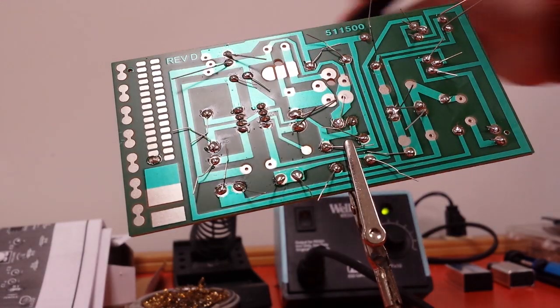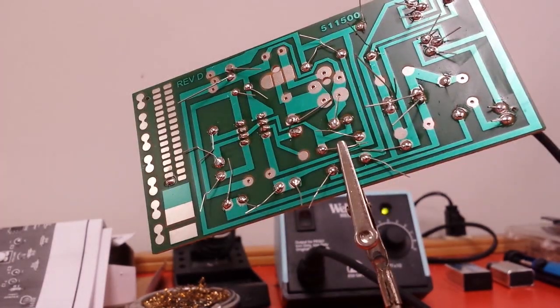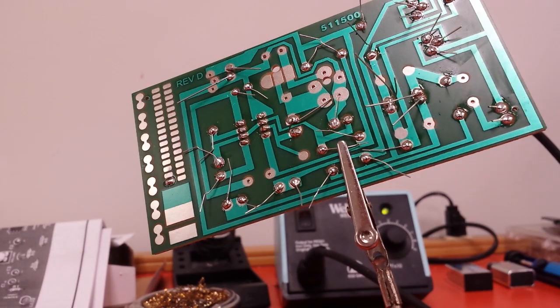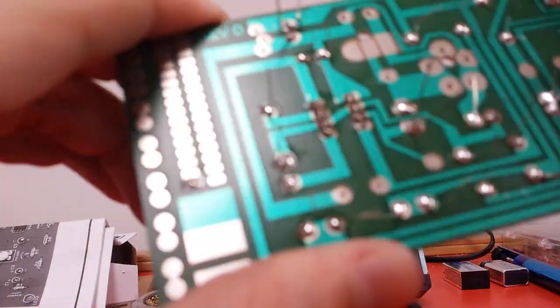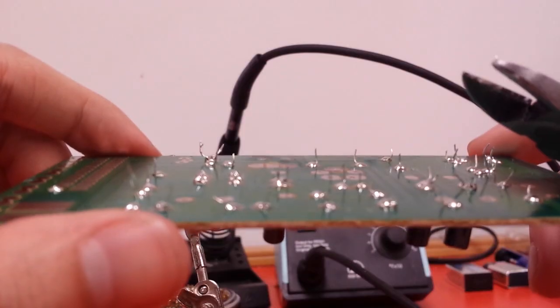Alright, so that about does it for all the components. Now we can start clipping the edges here before we put the potentiometer in. And let's turn this thing upside down, start soldering that.